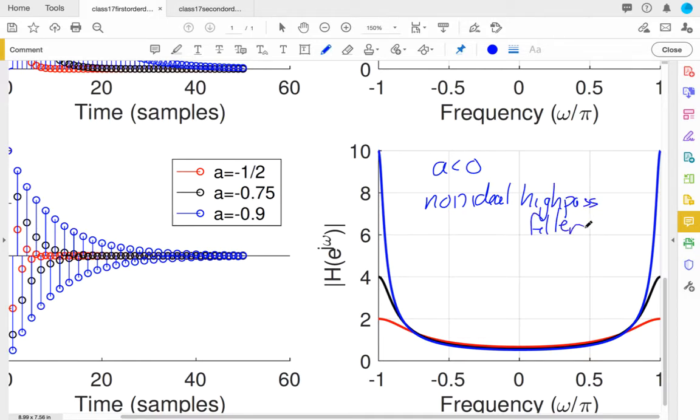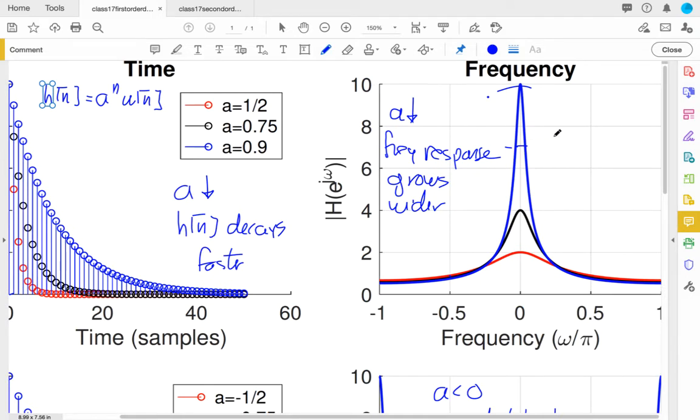So this is showing the passband of these non-ideal filters that when A is less than 0 here, I get this is a non-ideal, but it is a high-pass filter. Or I should have labeled the one above. This is an approximate or non-ideal low-pass filter.